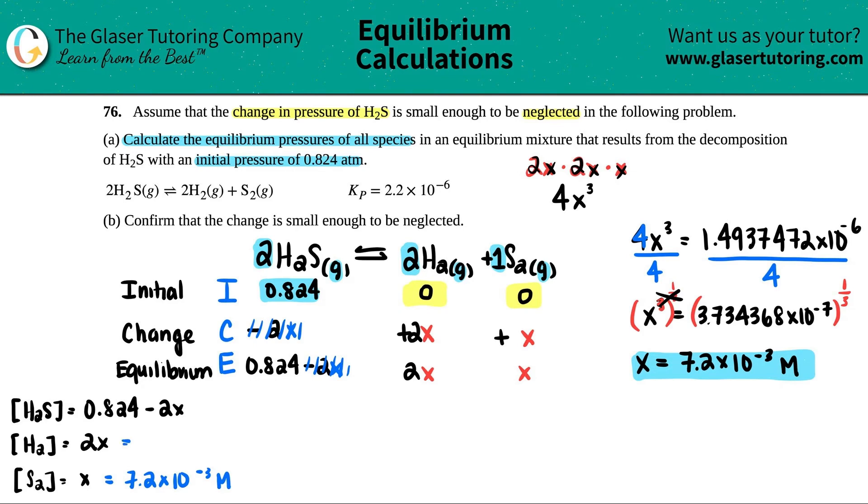Now for the H2, all we have to do is just take 2 and times it by the X, right? So 2 times 7.2 times 10 to the negative third. Let's see what we get. So 2 times 7.2 times 10 to the negative third. I get 0.014 if you round it to the two sig figs, but it would be 0.0144 if we didn't care. And that's that molarity. And now for this one, we have to do 0.824 minus 2 times that X value. 7.2 times 10 to the negative third. And then let's see what we get.